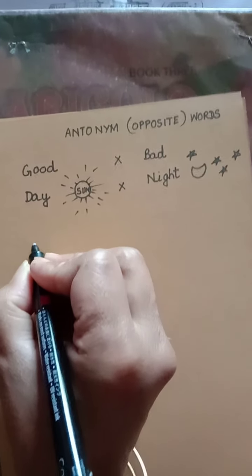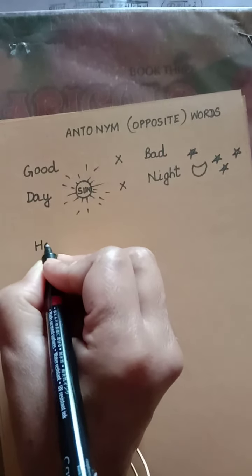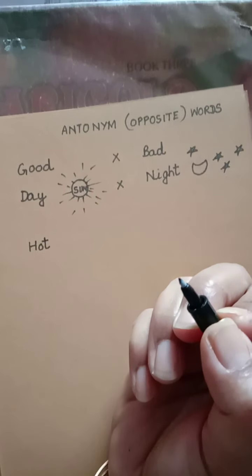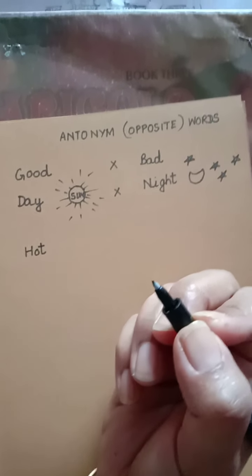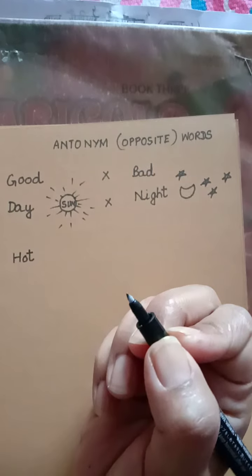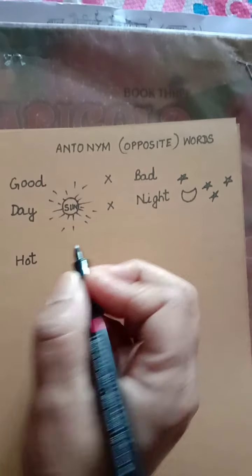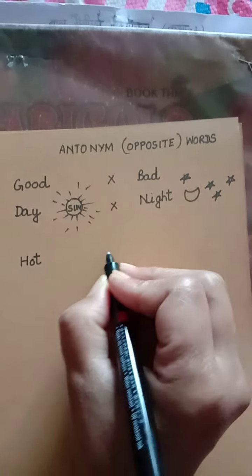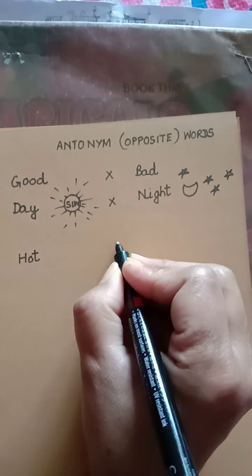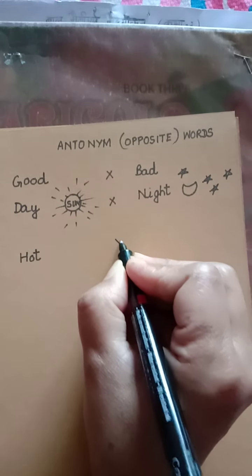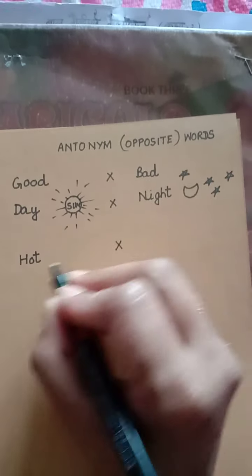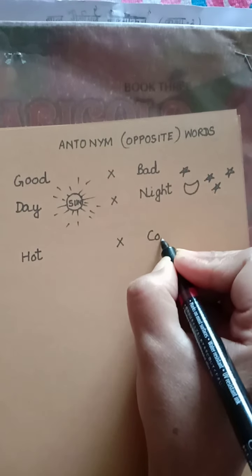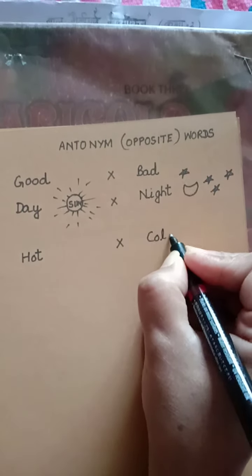Next word is H-O-T, hot. Hot means garam. Now, the opposite of garam will be thanda. So, cold — C-O-L-D. The opposite of hot is cold.